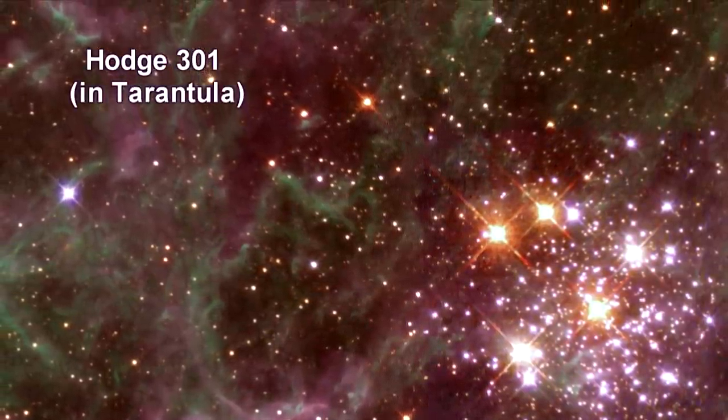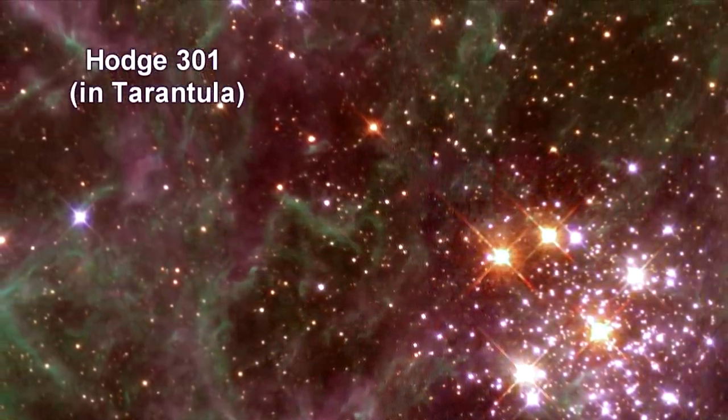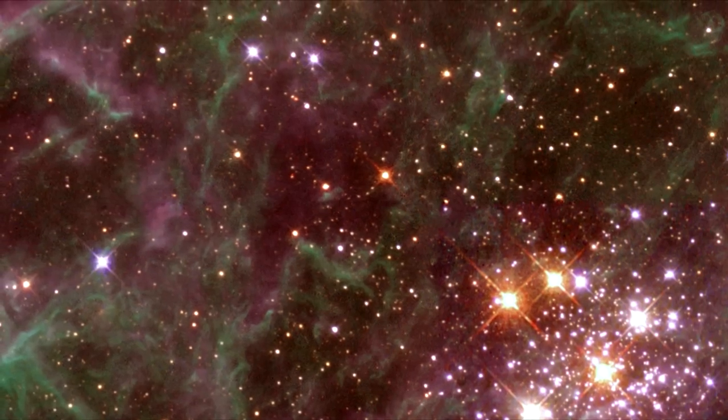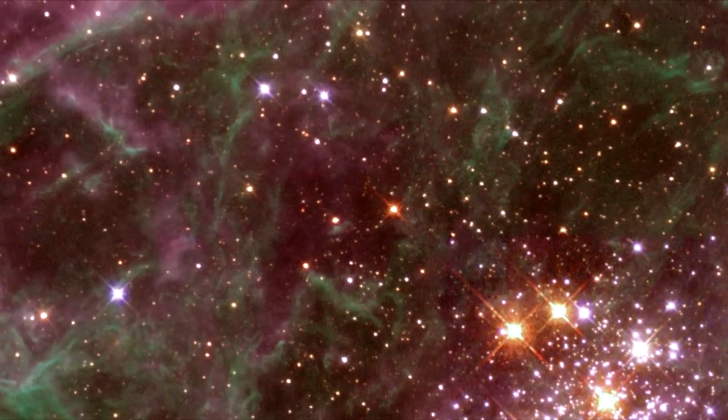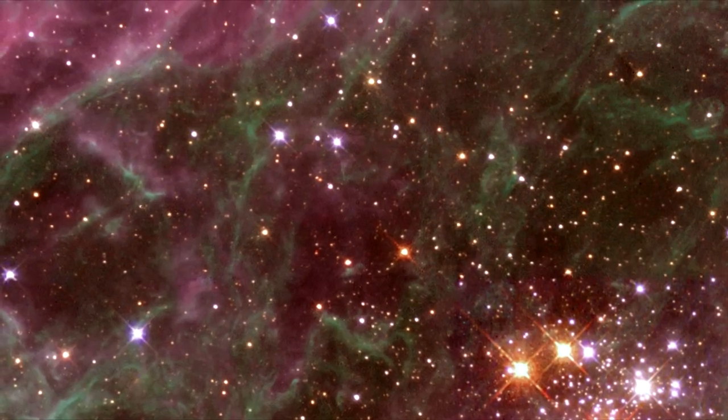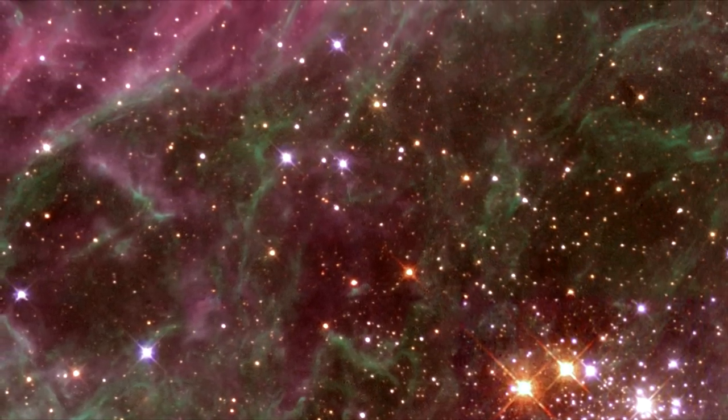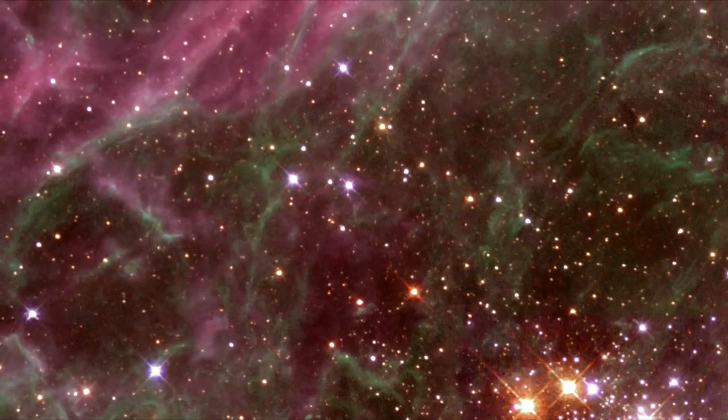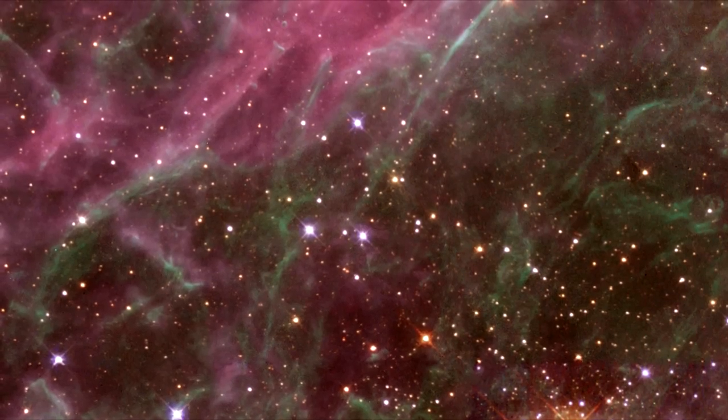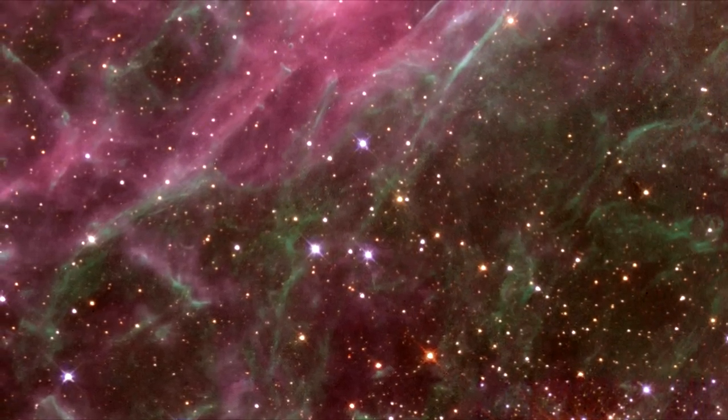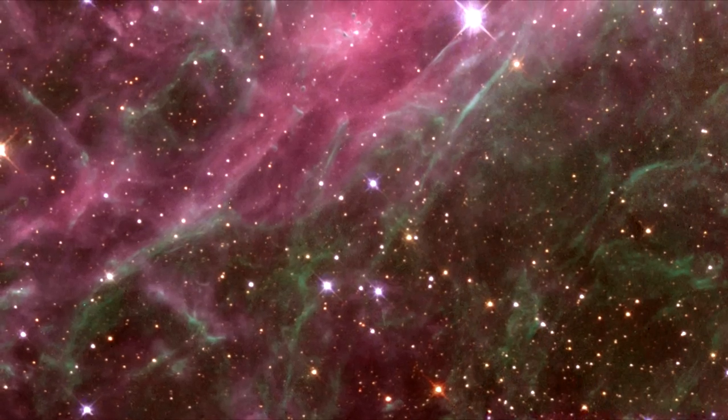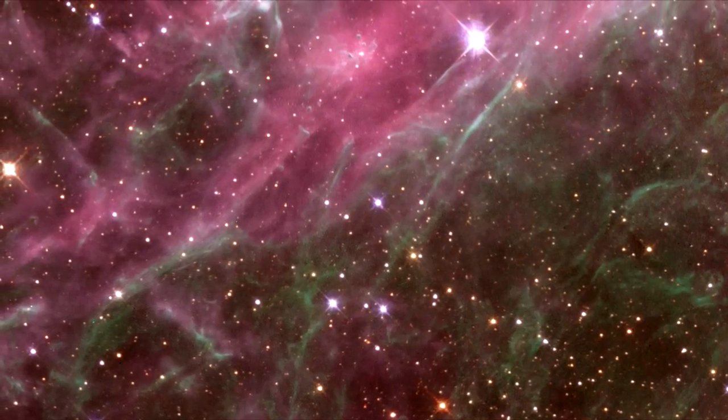Hodge 301, seen in the lower right-hand corner of this image, lies inside the Tarantula Nebula. Many of the stars in Hodge 301 are so old that they have exploded as supernovae. These exploded stars are blasting material into the surrounding region at speeds of almost 200 miles per second. The high-speed matter is plowing into the surrounding Tarantula Nebula, shocking and compressing the gas into a multitude of sheets and filaments seen in the upper left portion of the picture.